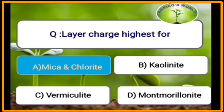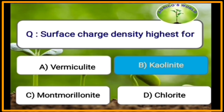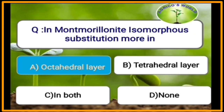Layer charge is highest for mica and chlorite. Anion exchange capacity is highest for kaolinite. Surface charge density is highest for kaolinite.